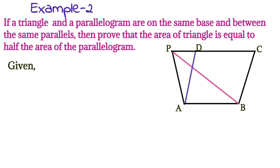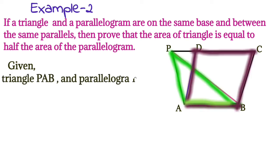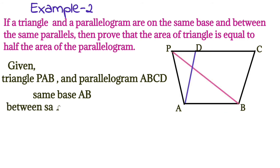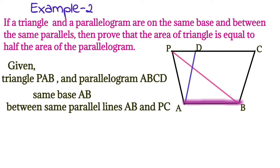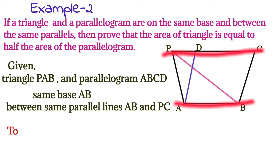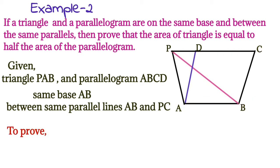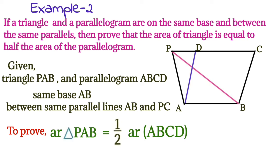Let's start to write what is given here. Given: triangle PAB and parallelogram ABCD are both on the same base AB, and the parallel lines are AB and PC. We have to prove that area of triangle PAB is equal to half of the area of parallelogram ABCD.